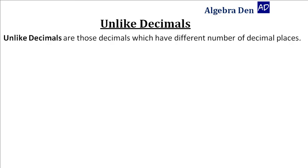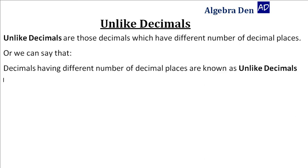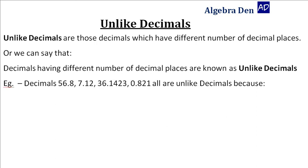Unlike decimals are those decimals which have different number of decimal places. Or we can say that decimals having different number of decimal places are known as unlike decimals. For example,